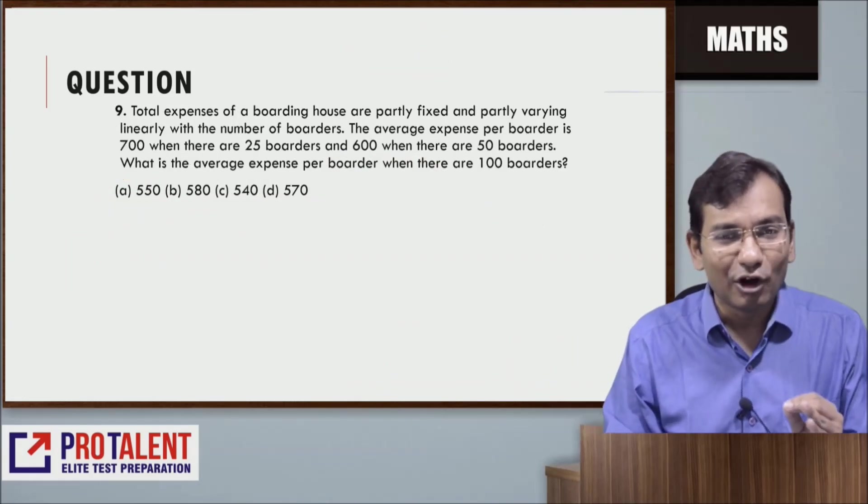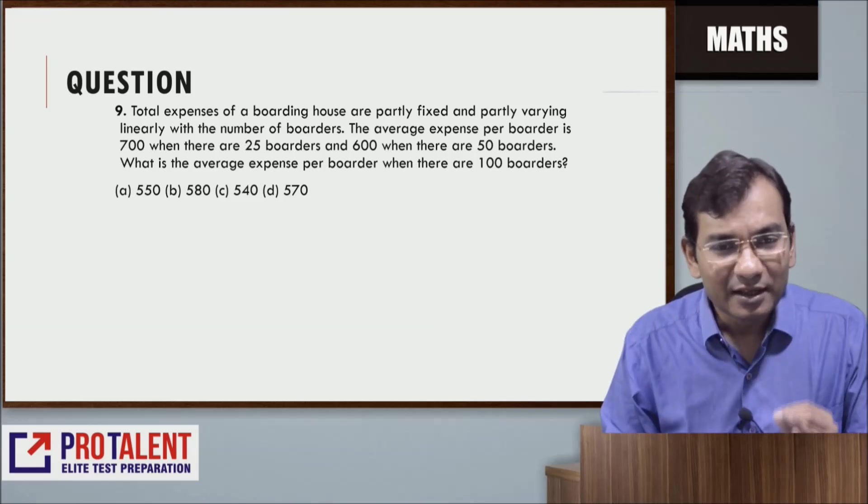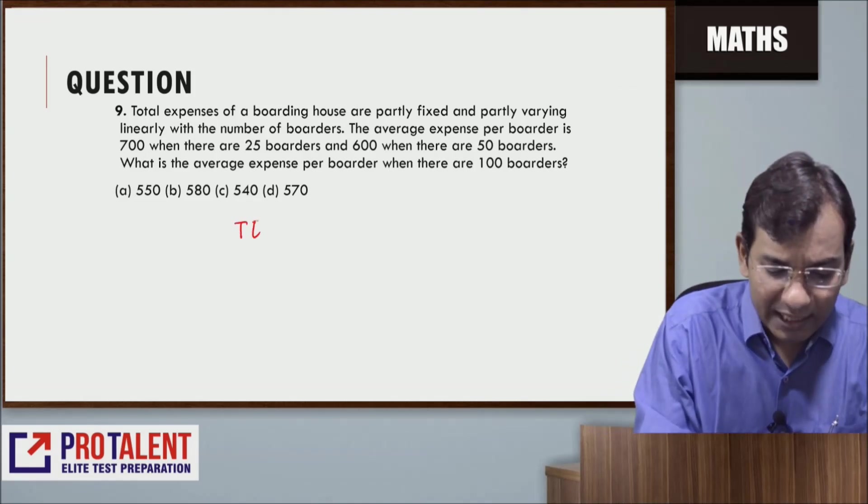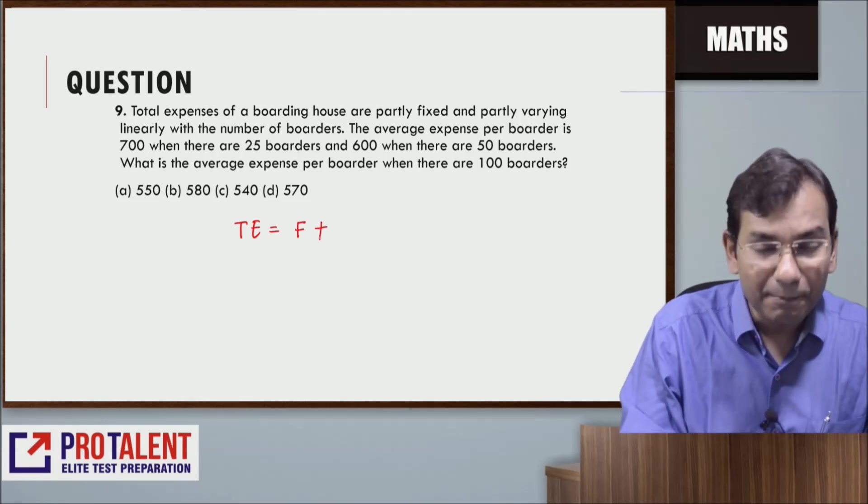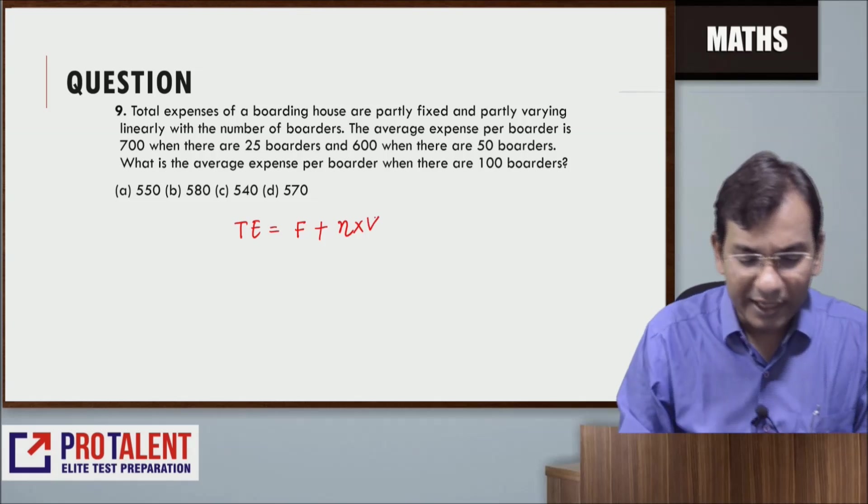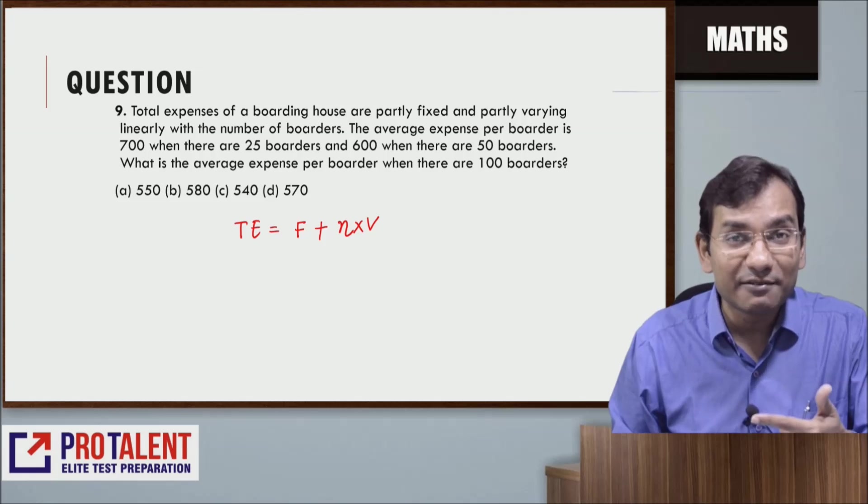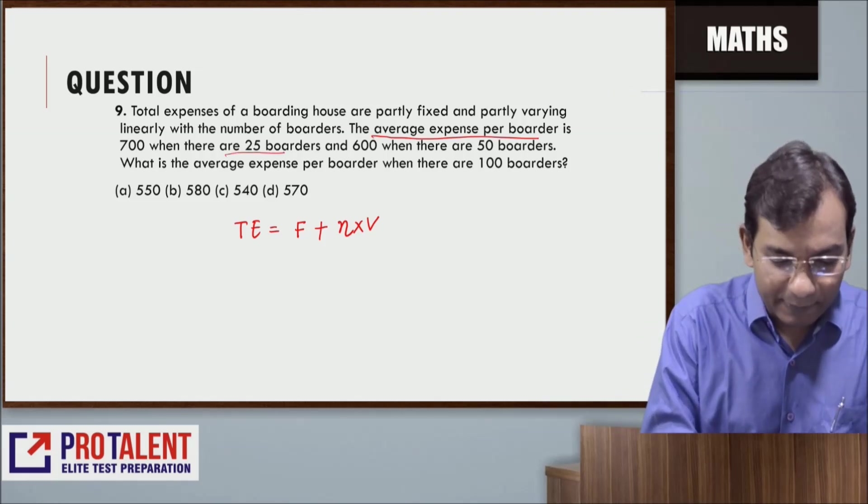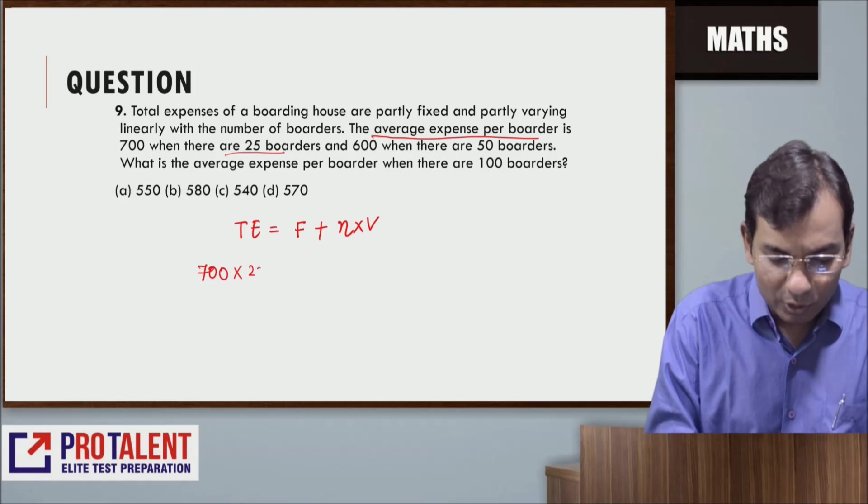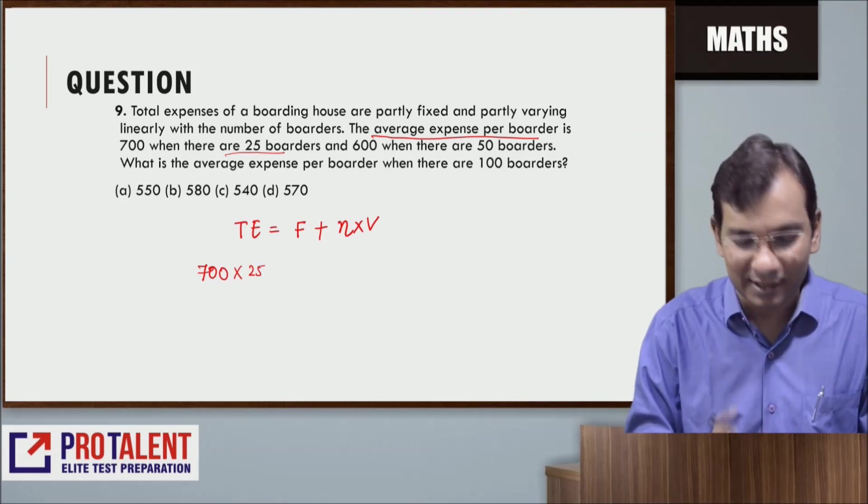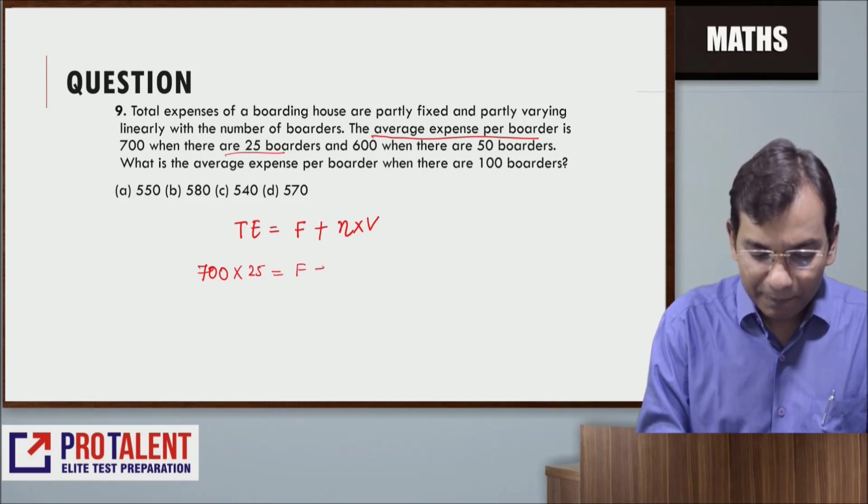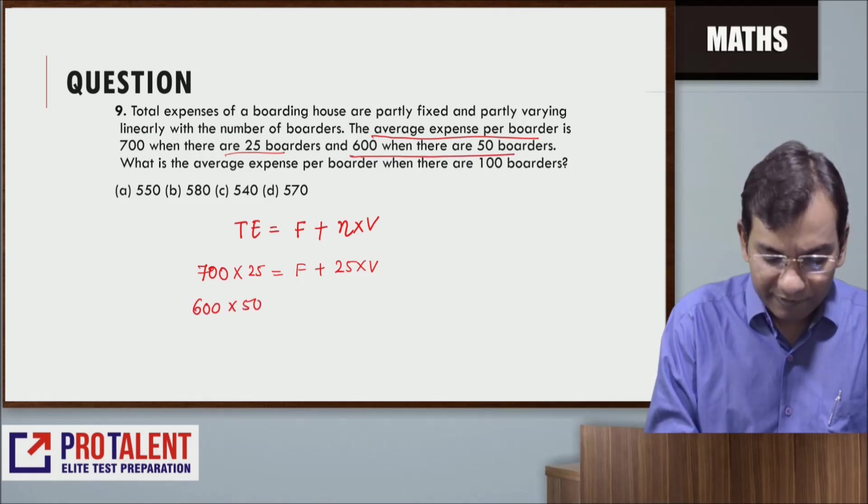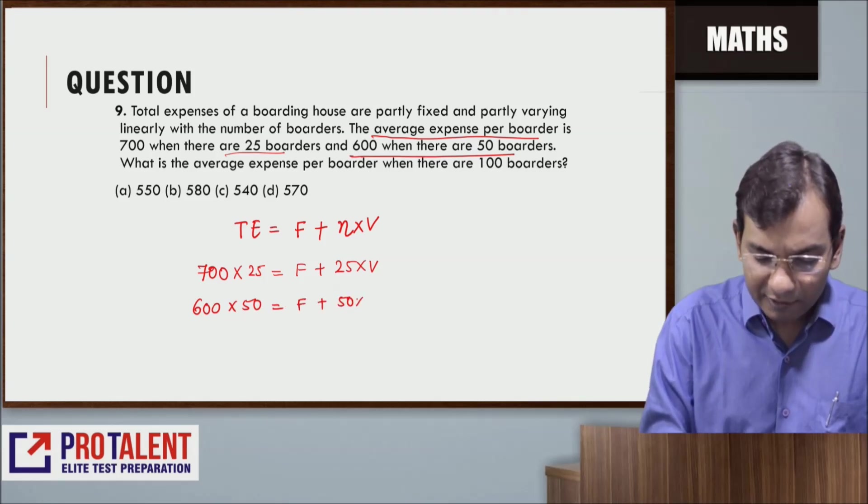Question number nine: Total expenses of a boarding house are partly fixed and partly varying linearly with the number of boarders. This is a standard question. What's being asked? Total expenses are partly fixed plus partly varying with number of boarders. Let me assume F is my fixed cost, V is variable cost per person, N is number of boarders. When there are 25 boarders, total is 700 × 25 = F + 25V. When there are 50 boarders, it's 600 × 50 = F + 50V.